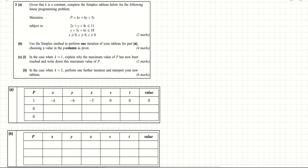Now we put in the constraints. For 2x plus y plus 4z less than or equal to 11: coefficient of x is 2, coefficient of y is 1, coefficient of z is 4, and the right-hand side value is 11. The slack variable s gets a 1 and t gets a 0. For the second constraint x plus 3y plus 6z less than or equal to 18: coefficients are 1, 3, 6, value is 18, and now s gets 0 and t gets 1.